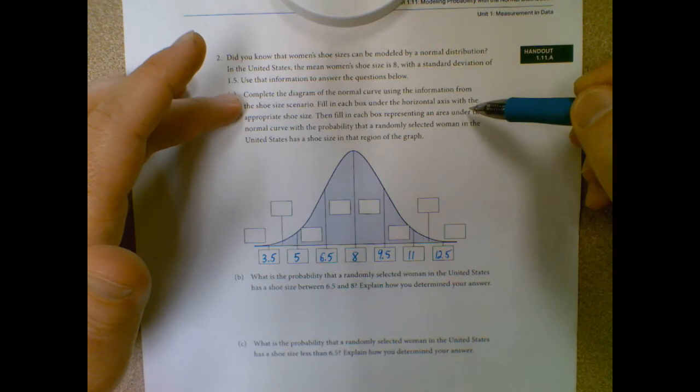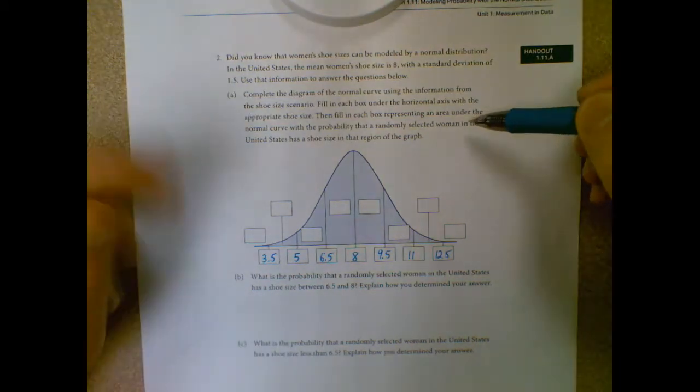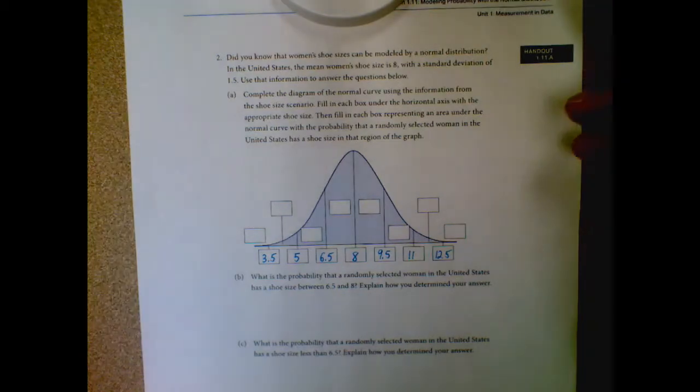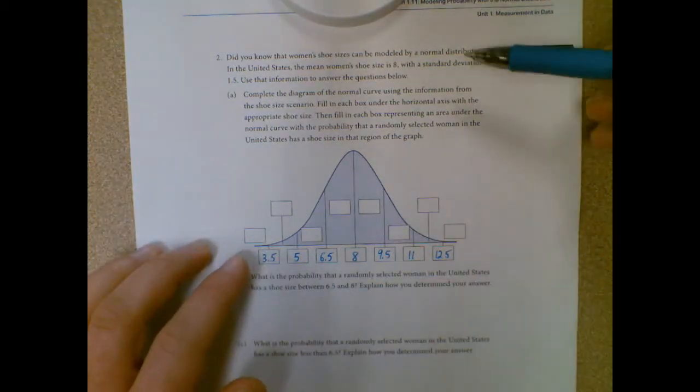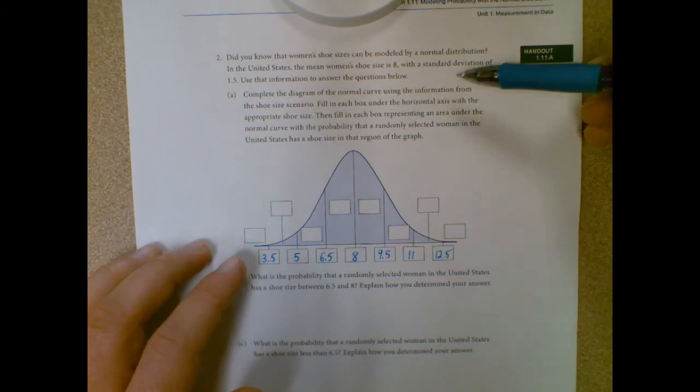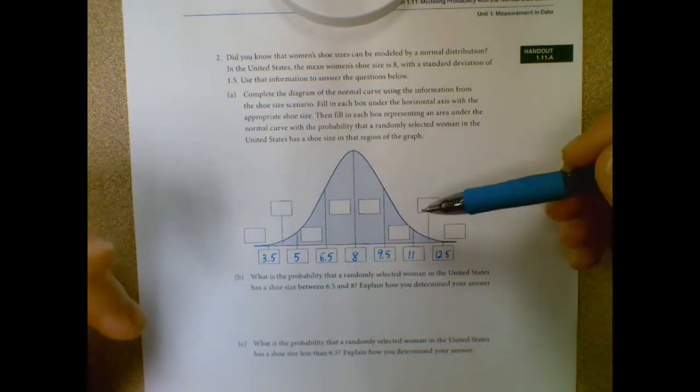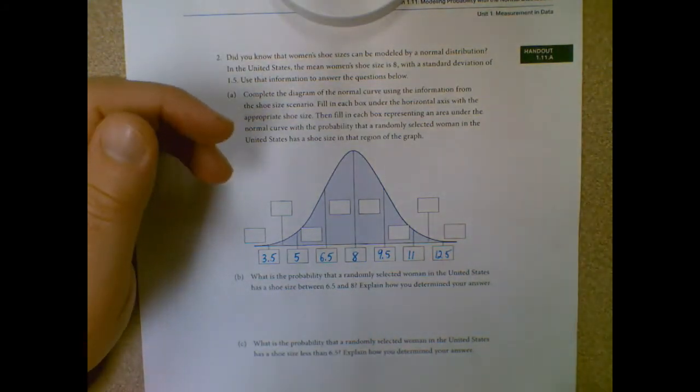So we fill in that part. And fill in each box to represent an area under the normal curve with the probability that a randomly selected woman in the United States has a shoe size in that region of the graph. So this would be a little bit different than the way we looked at the first one, because instead of numbers, like in the first one we had 40,000 people, so we just broke that apart. This one, they just want the probability. So it actually is a little bit easier. It saves us one step.